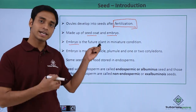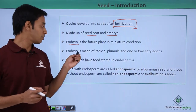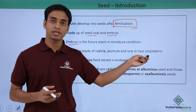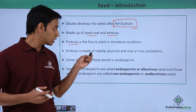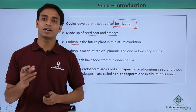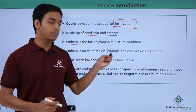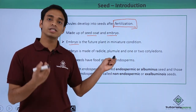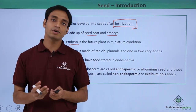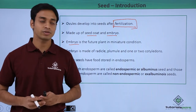The embryo is made up of the radicle, the plumule, and one or two cotyledons. The radicle is the portion of the plant which later develops into the roots, growing below the soil. The plumule is the portion of the plant which later develops into the shoot, growing above the soil and bearing fruits, flowers, leaves, branches, and stem.